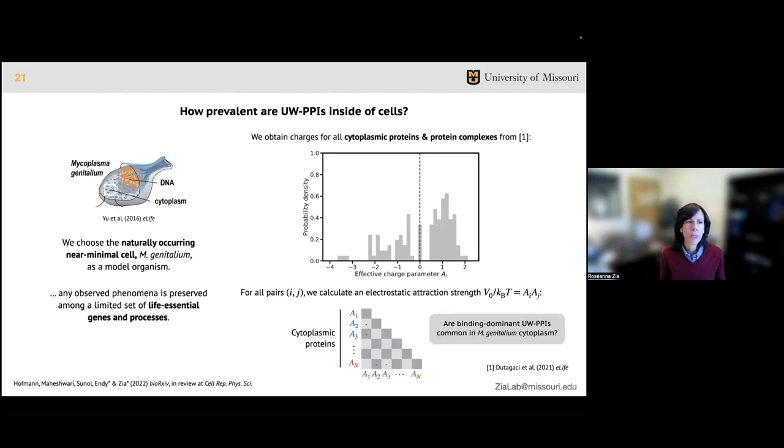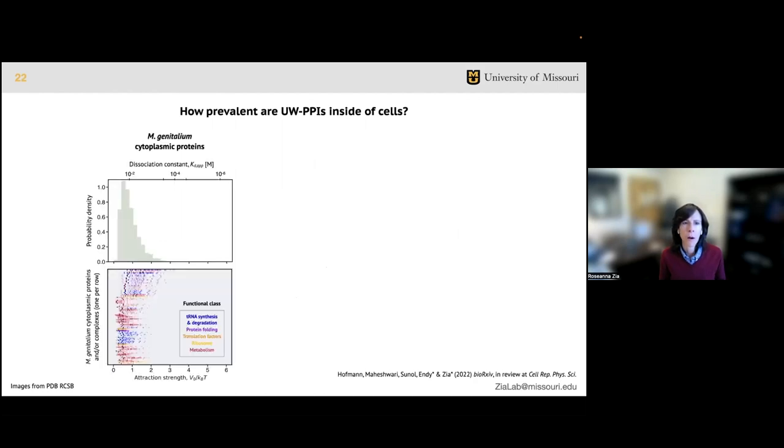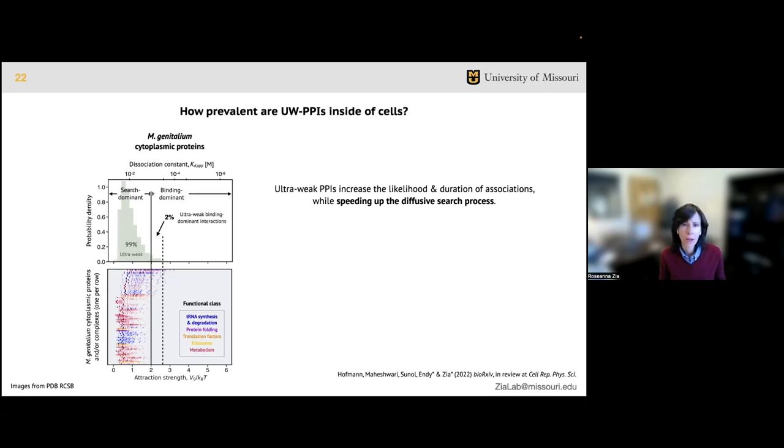To investigate, we turned to the model organism Mycoplasma genitalium, a naturally occurring near-minimal cell, meaning any interactions or phenomena observed there are likely conserved among a limited set of life essential genes and processes. I'll emphasize that what we learn here can be potentially quite broadly applied to all cells. We focus on cytoplasmic proteins and protein complexes, and we used established charge data to calculate a set of electrostatic interaction strengths, V0/kT, for all possible protein pairs in the cytoplasm of this organism. From these distributions, we can interrogate the prevalence of binding dominant ultra-weak interactions and identify specific protein-protein interactions in this regime.